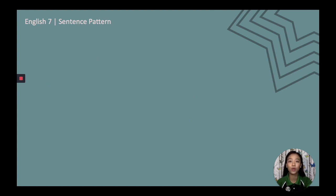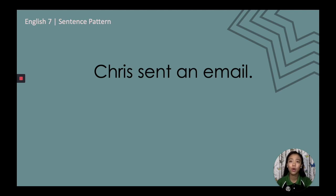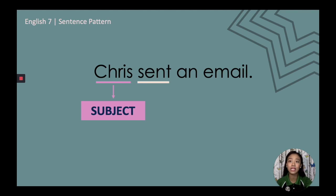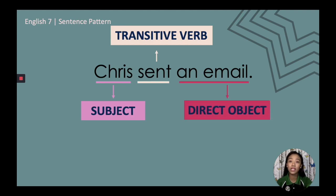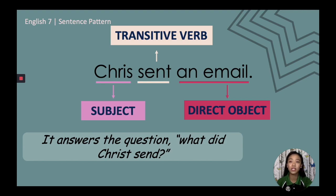'Chris sent an email.' To identify the subject, ask: who is doing the action? The answer is Chris, so Chris is the subject. To identify the transitive verb, ask: what is the action of the subject? The answer is 'sent.' The verb 'sent' is transitive because removing 'an email' leaves the thought incomplete. Lastly, 'an email' answers the question 'what did Chris send?' — so 'an email' is the direct object.